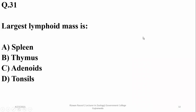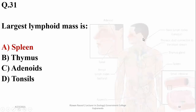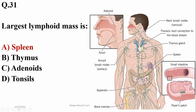The largest lymphoid mass in the lymphatic system is the spleen, which exists just above the kidneys. The thymus gland is another large lymphoid mass, and tonsils as well as adenoids are also considered lymphoid masses.